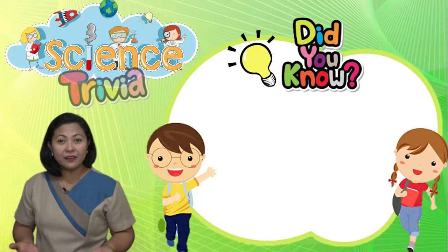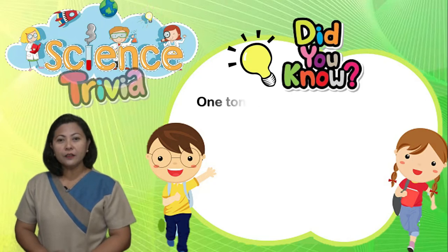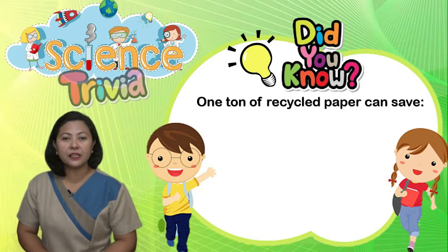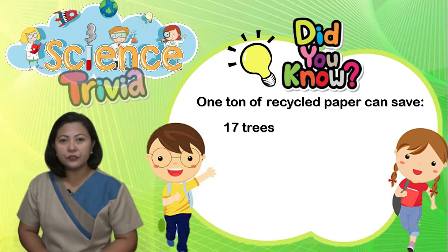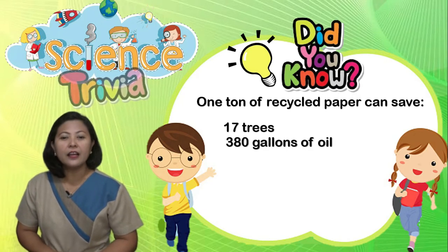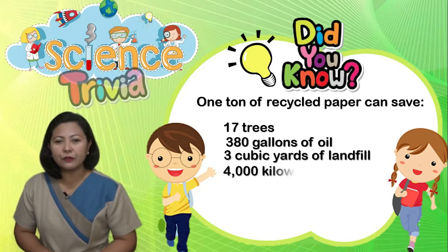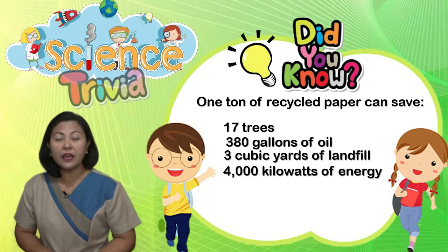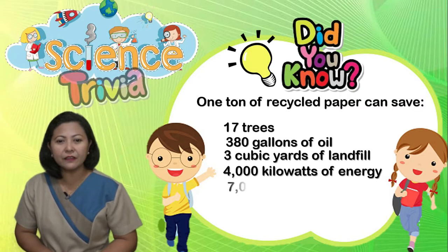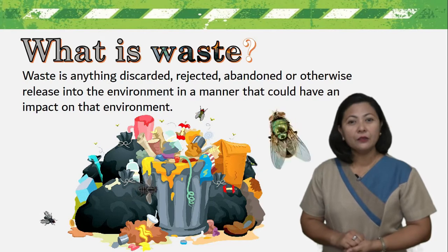But before we start, did you know that 1 ton of recycled paper can save 17 trees, 380 gallons of oil, 3 cubic yards of landfill space, 4,000 kilowatts of energy, and 7,000 gallons of water?